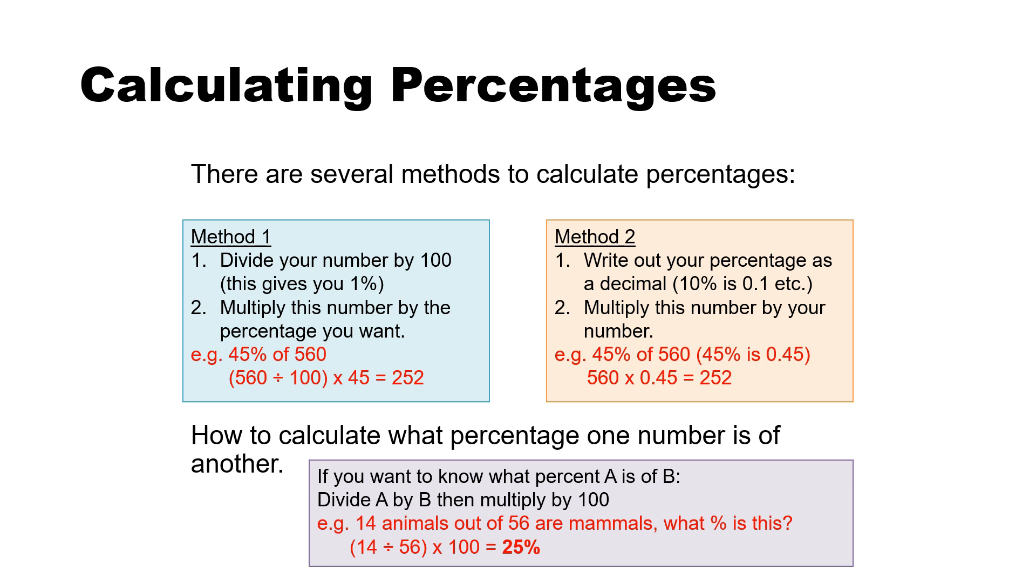Calculating percentage. So there are several methods of calculating percentages. And so you might have to calculate what percentage one number is of another. So method one is dividing your number by 100. So this gives you 1%, for example, and then multiply the number by the percentage you want. So 45% of 560. So 560 divided by 100 times 45 gives you the answer. Or you could write out your percentage as a decimal. So 0.1. Multiply the number by your number. So in the second example, 45% is 0.45. So it's 560 times 0.45. Probably in your schools within maths, they've told you a particular method. I would just stick to the method that you're really familiar with.